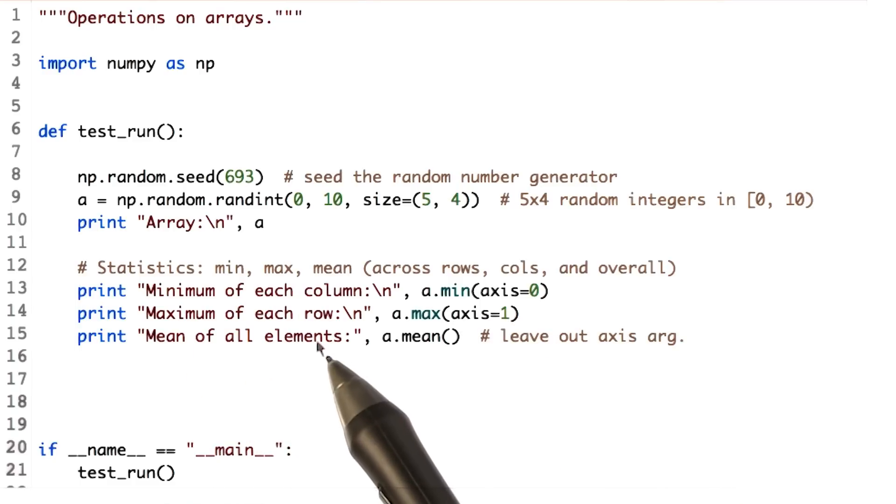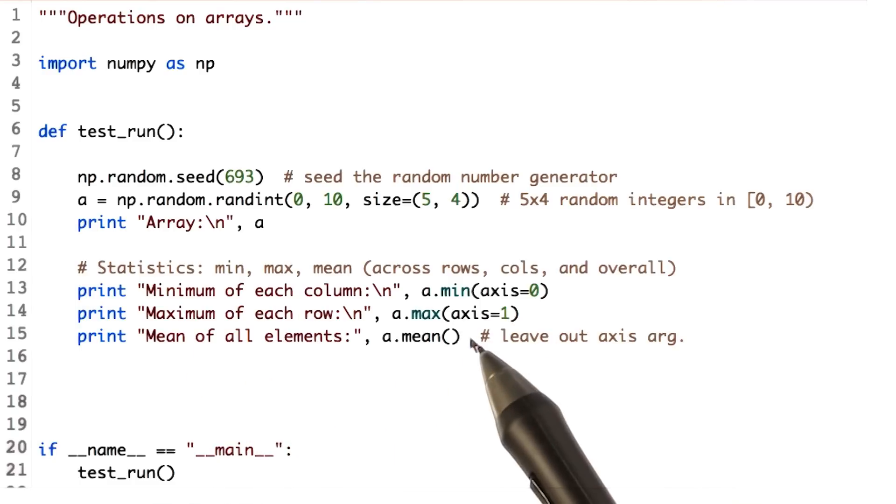To get the maximum of each row, similarly we call the max function and pass axis equal to one. Just calling a.mean, that is array.mean, will give us the mean of the entire array. Of course we can get mean along each axis as we did for max and min.